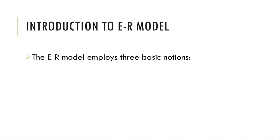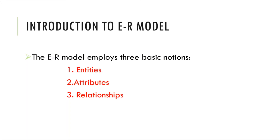Introduction to ER model: the ER model employs three basic notations — entities, attributes, and relationships. Entities are real-world objects; for example, in a hospital management database, doctors, nurses, patients, hospital rooms, and operation theatres are entities. A set of the same type of objects is called an entity set. Attributes are the properties of entities — for example, a doctor's ID, name, contact number, qualification, and department.